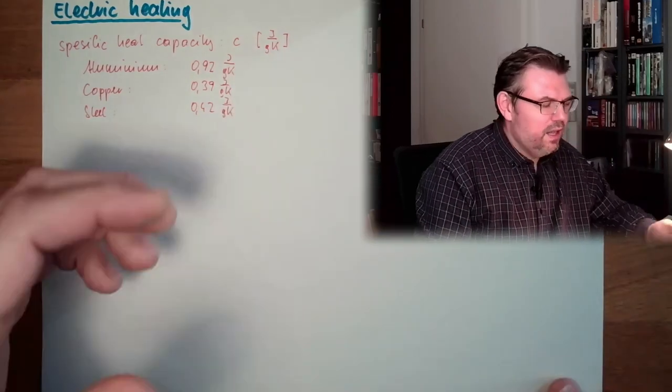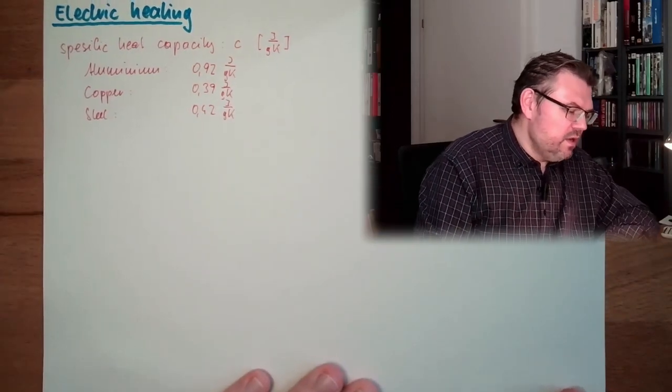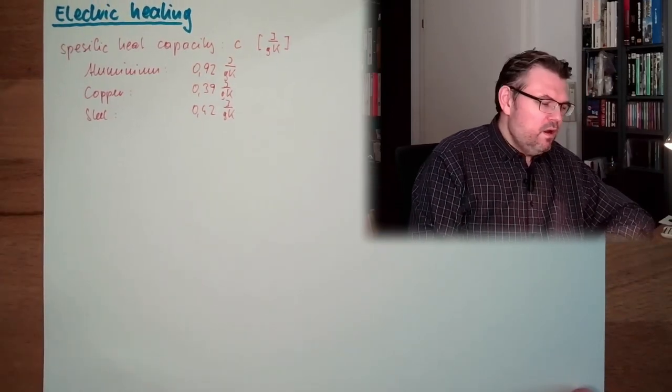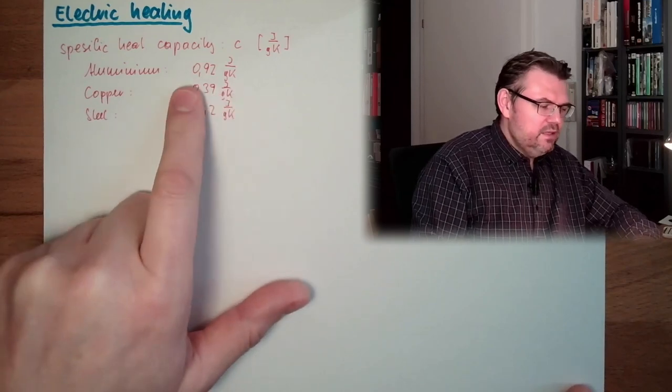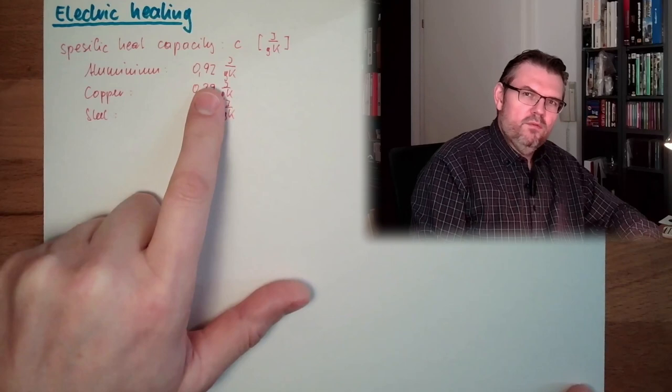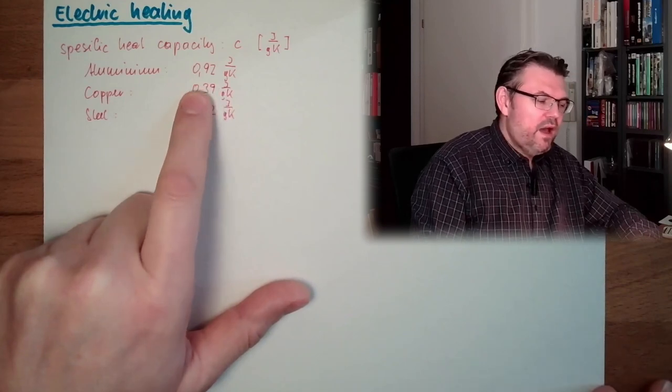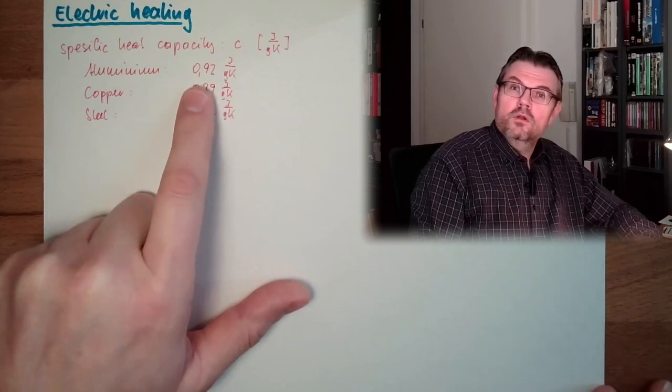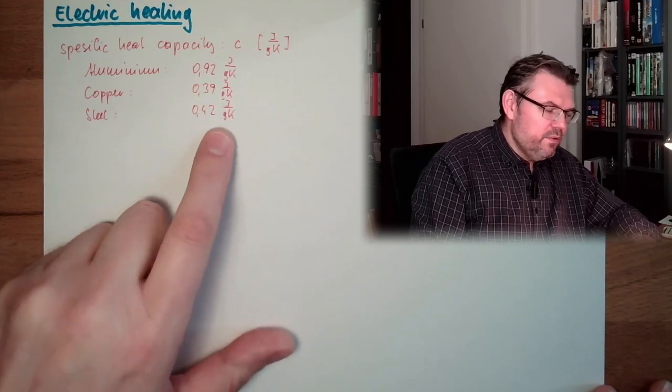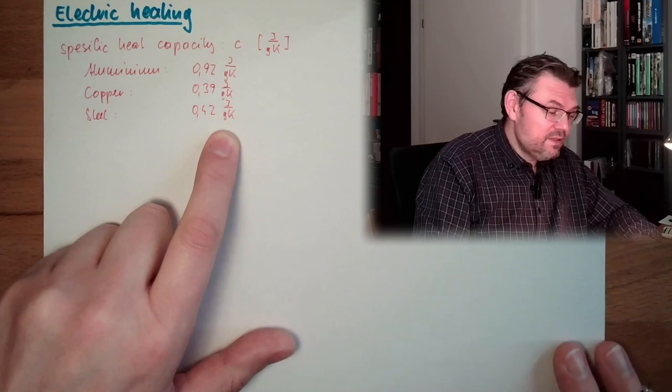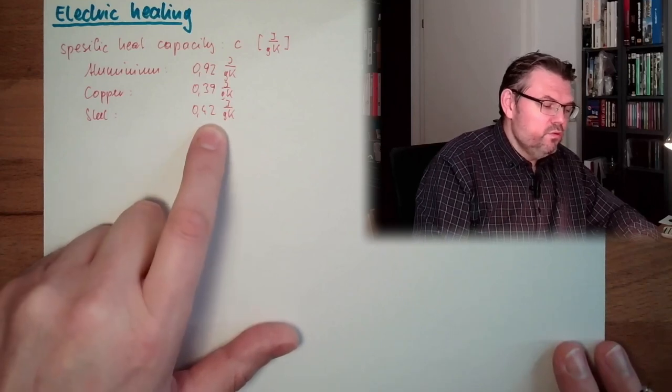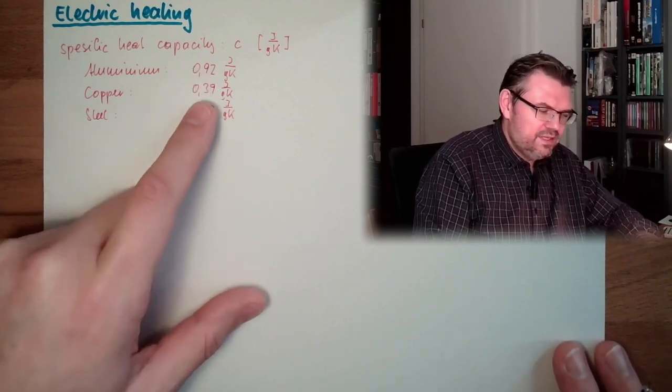You see, they are all. The aluminum is a little bit more. So, if I want to heat up one gram of aluminum by one kelvin, I need 0.92 Joule. If I want to heat it up by 100 K, I would use 92 Joule. And if I'm using one gram of steel, heat up 100 K, I would use 42 Joule.